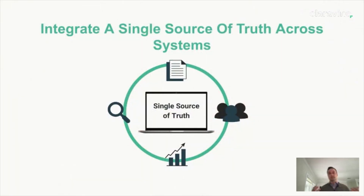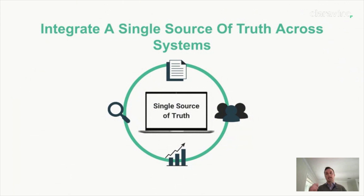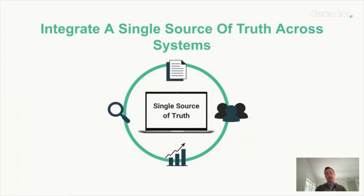Last but not least, once you have that unified taxonomy and everybody has agreed on how you will name things across the enterprise, you need a single source of truth across these systems — something that teams, often global in nature, can access, transform, and look at the data, ensuring all data is captured accurately in the naming conventions they need. If you can do those four things, you're going to be on your way. But this is a journey — not something done in months. The enterprise and marketing organization needs to commit to it, have rigor and process around it. Especially now with all the changes going on in our industry, this is a vital commitment.